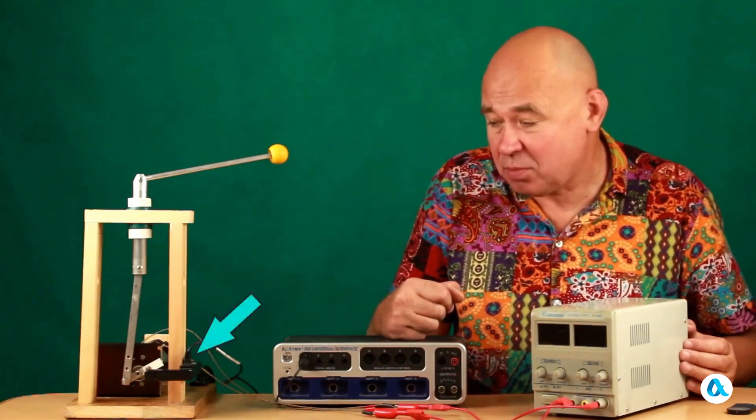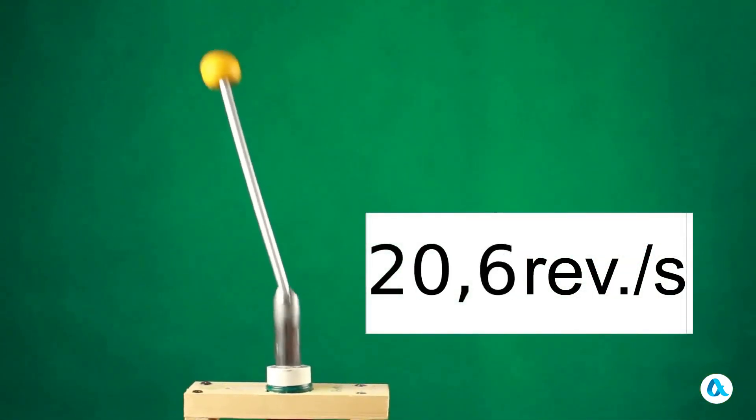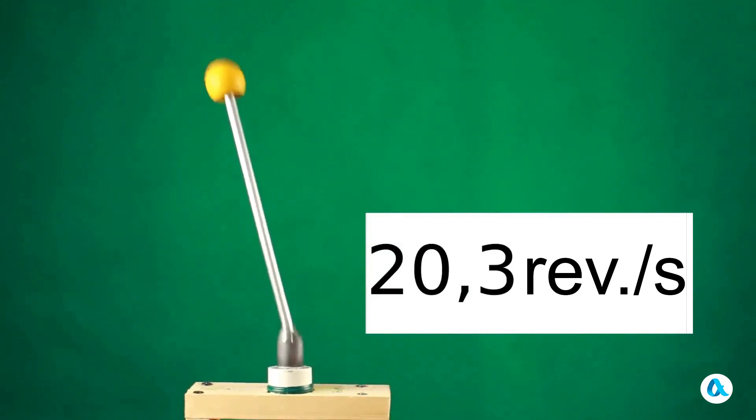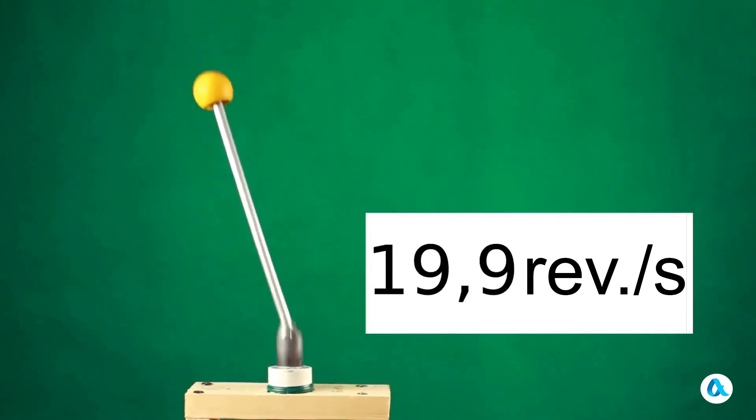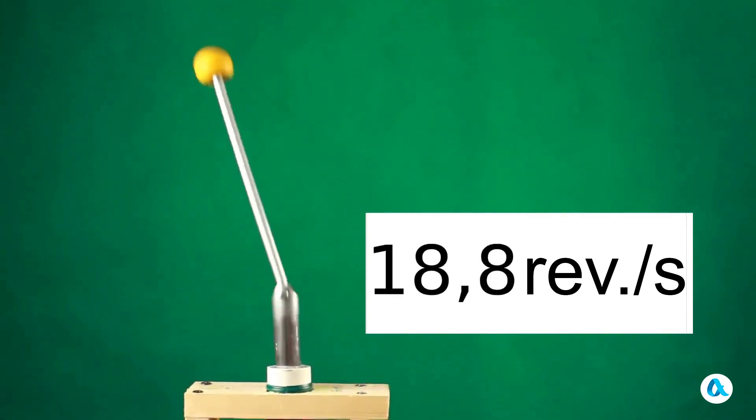Well, I will measure the motor's rotation frequency using a photogate. And at a frequency of 20 revolutions per second, the pendulum holds quite well. 19 revolutions per second, however, it tilted a little to the side. This apparently relates to the inaccuracy in the manufacturing of our setup.